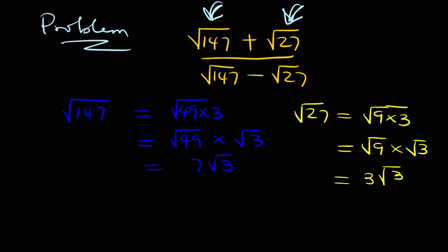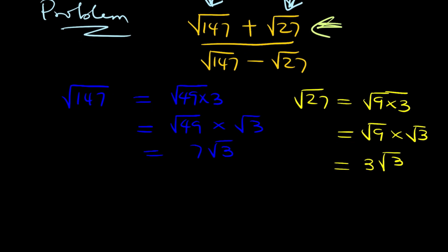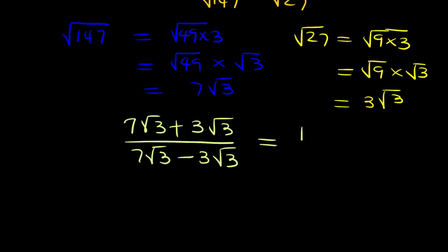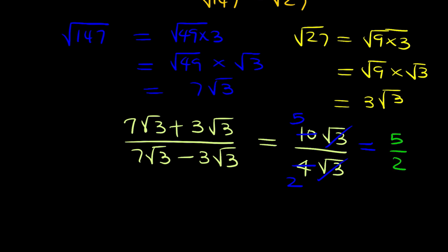So back to the expression: for the numerator we now have 7 root 3 plus 3 root 3, and the denominator is 7 root 3 minus 3 root 3. This simplifies to 10 root 3 divided by 4 root 3. The root 3 cancels, and we can say 10 over 4, which reduces — dividing by 2 gives 5 over 2. Just like we got earlier, the final answer is still 5 over 2.